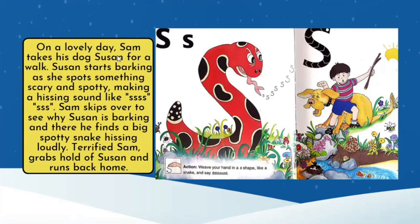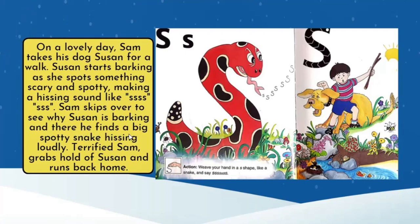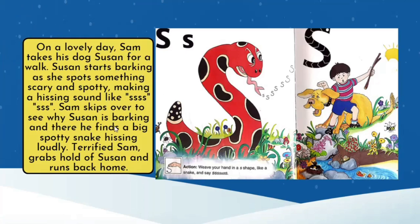For example: 'On a lovely day, Sam takes his dog Susan for a walk. Susan starts barking as she spots something scary and spotty, making a hissing sound like ssss. Sam skips over to see why Susan is barking and there he finds a big spotty snake hissing loudly. Terrified, Sam grabs hold of Susan and runs back home.' If you are teaching non-native speakers, try to demonstrate this story with your actions — if he is grabbing hold of Susan, show them the action of grabbing. This way, your ESL students can understand the meanings of the words, and with phonics, you are building their vocabulary as well.